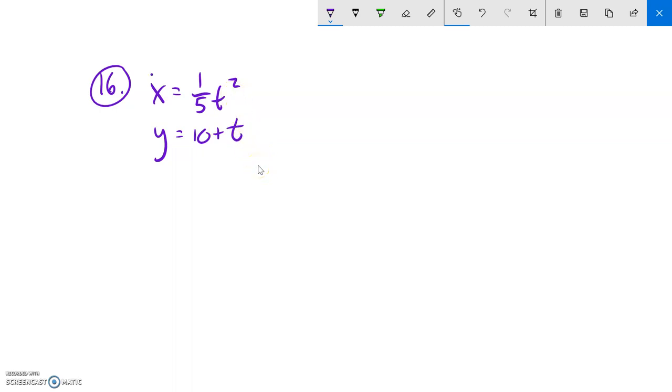So what I'm going to do is solve for t in one of the equations and then plug it into the other one. And this one looks pretty easy to solve for t. I could just subtract 10 from both sides. So I know then that t equals y minus 10.